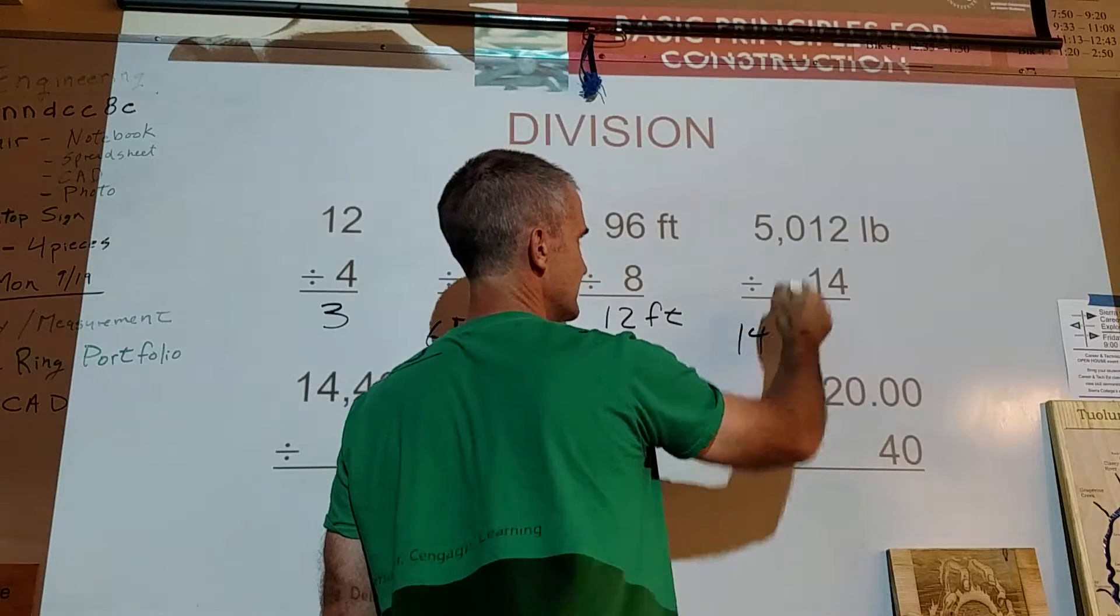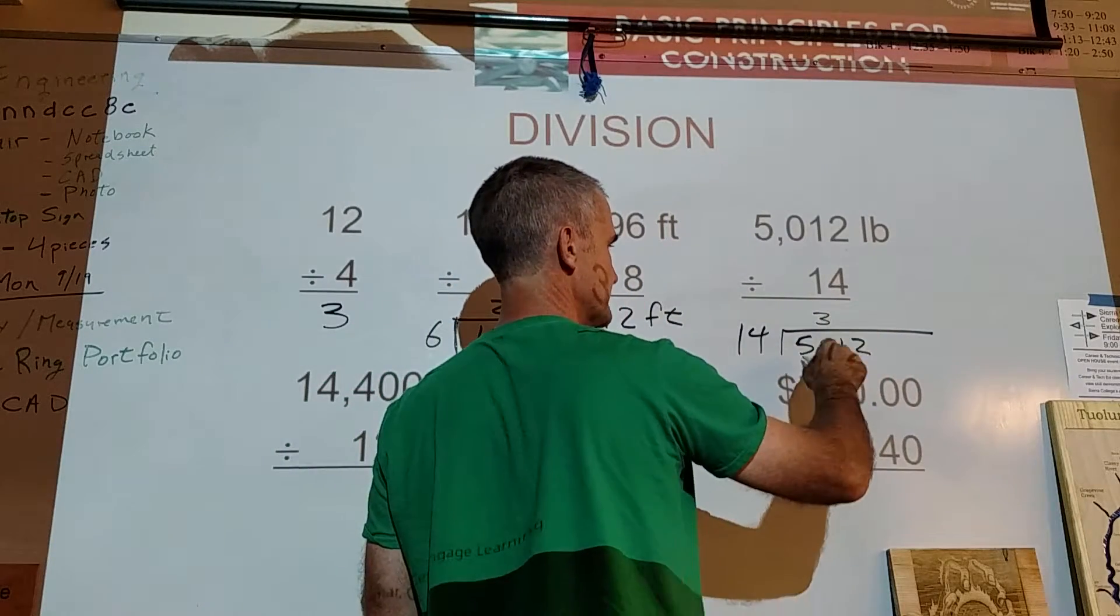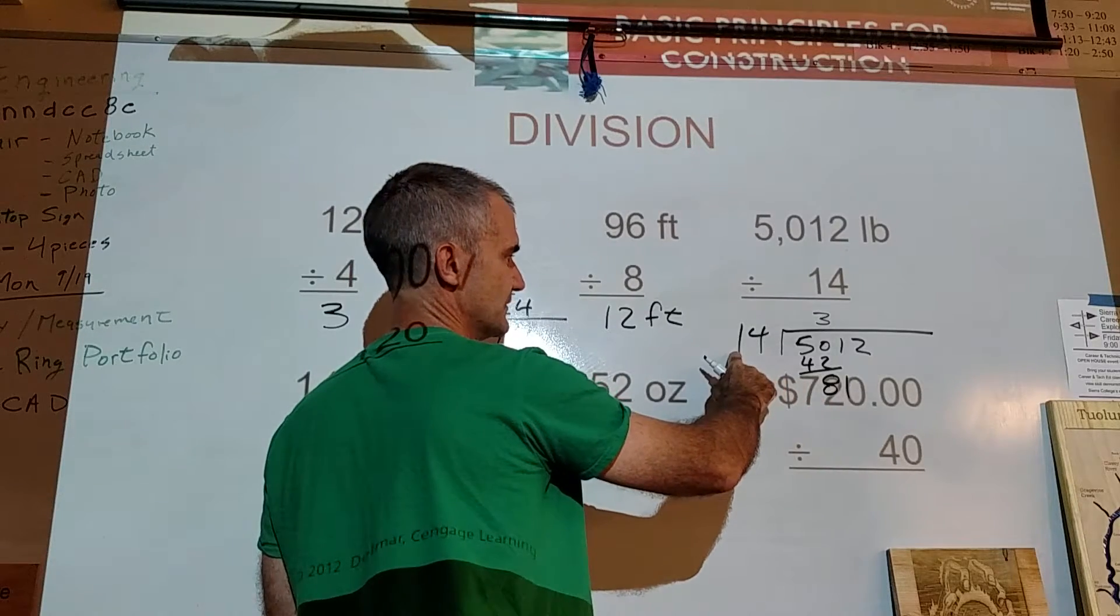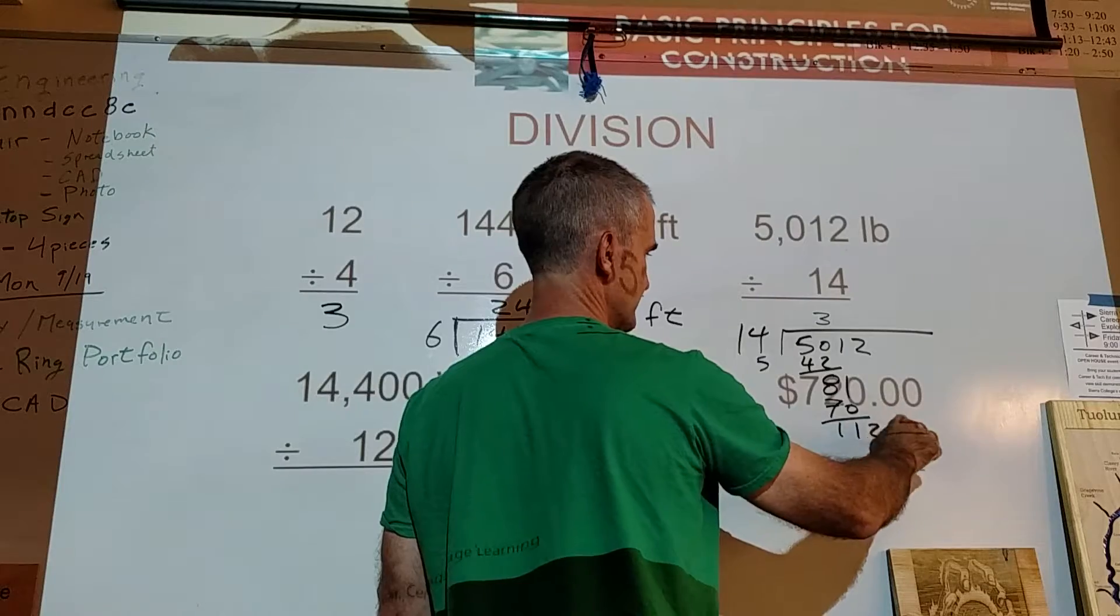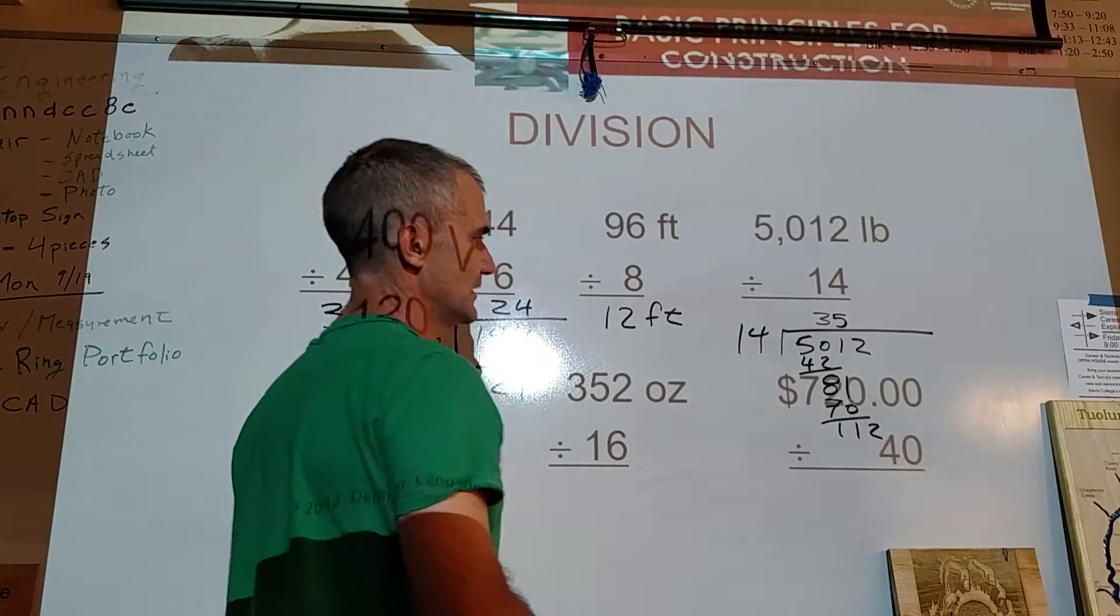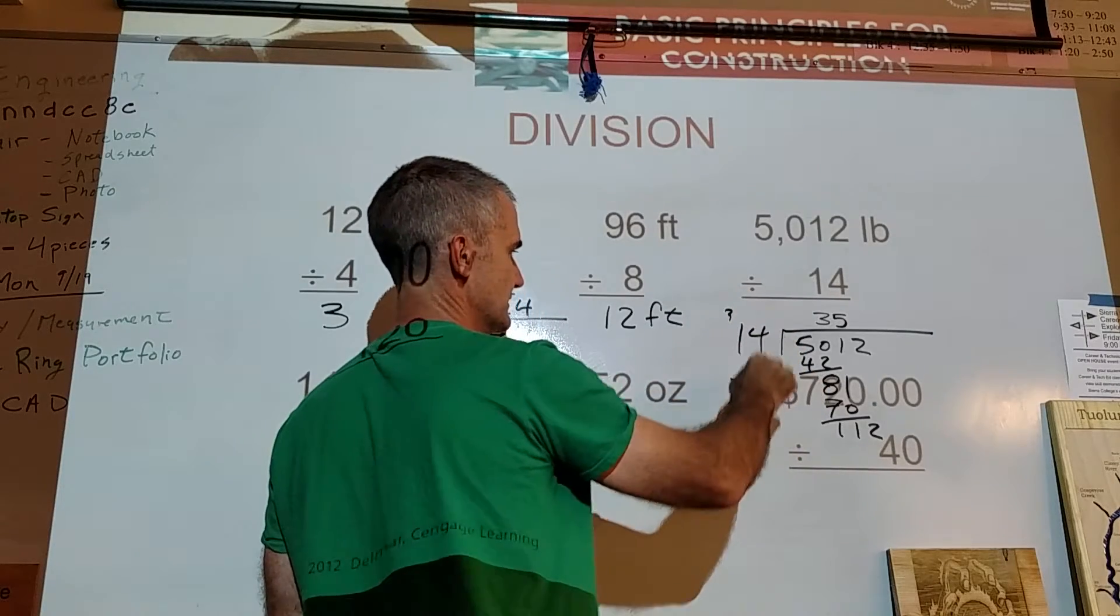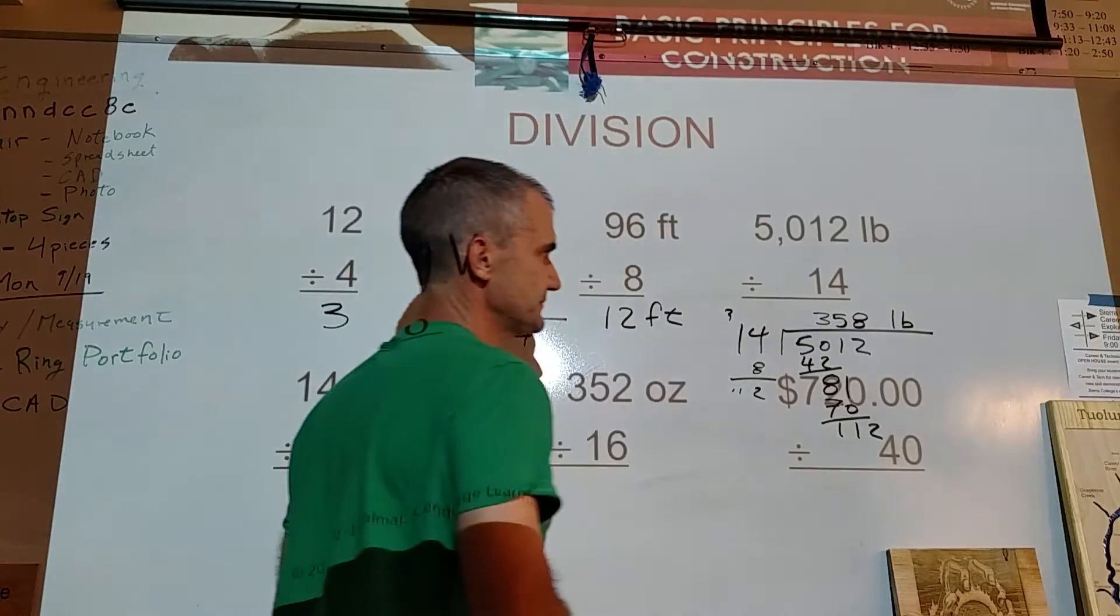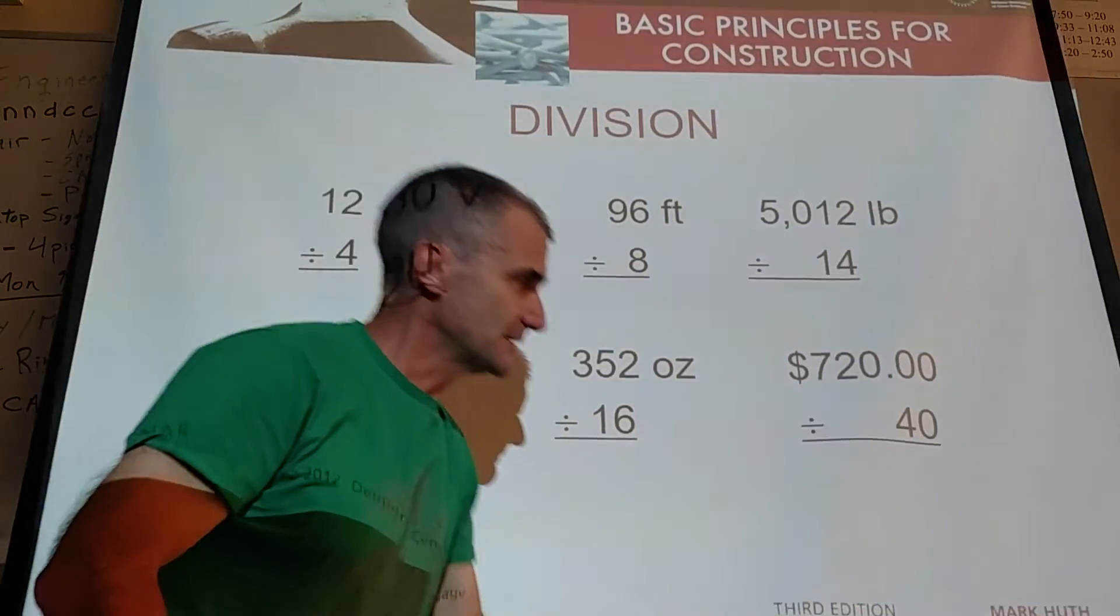5,012 pounds divided by 14. So 14 goes into 5,012. 14 goes into here 3 times, 42. 50 minus 42 is 8. Bring down the 1. 14 into 81. 5 is a little too high, right? No, it's not. 5 would be 50, 70. I'm going to give me 11, 112. 14 goes into 112. This is a 5 right here, right? 14 goes into 112, 9 times, 8 times. 8 would be 32. 112. So 14 goes into 112, 8 times. So my answer would be 358 pounds. So that's division. You've got to know your math facts, and you've got to keep track of your numbers. I think it's in pretty good order.